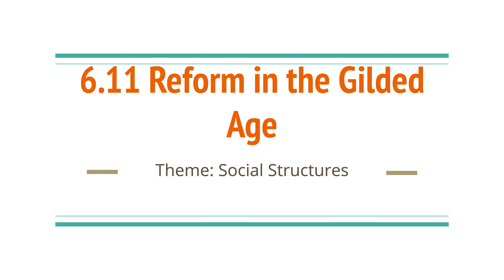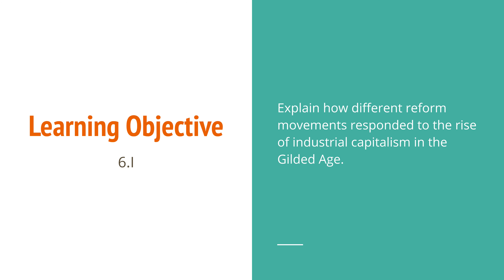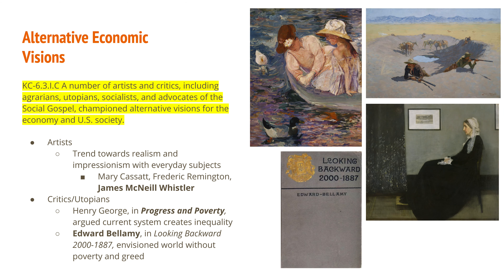Welcome back to lecture number 56. Today we're talking about historical topic 6.11, reform in the Gilded Age, and we are still on the theme of social structures. Our learning objective for today is to explain how different reform movements responded to the rise of industrial capitalism in the Gilded Age.